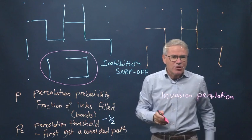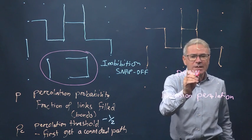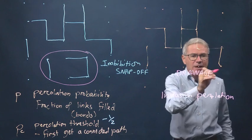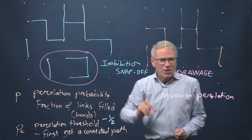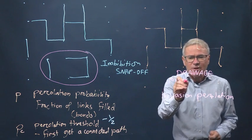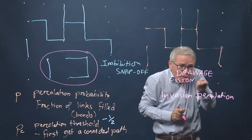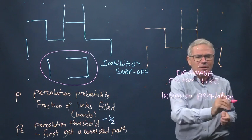So invasion percolation is a drainage process when a non-wetting phase displaces a wetting phase, and imbibition with snap-off, that's percolation. Drainage with what we called piston-like advance because you go through the centres of the pore space like a piston gives you invasion percolation.